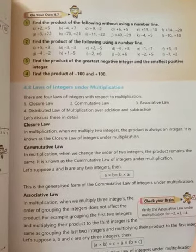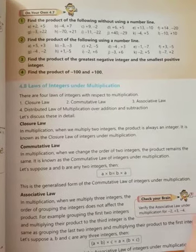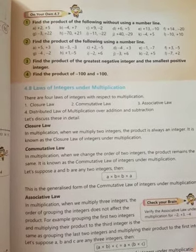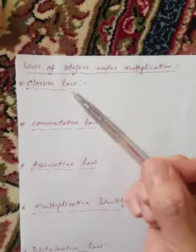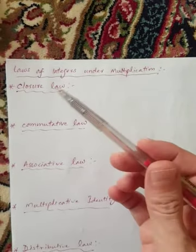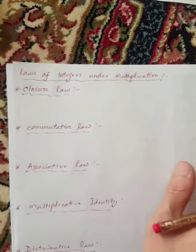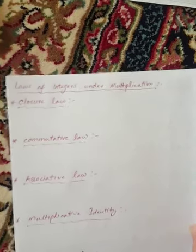Now the topic we'll share is the law of integers under multiplication. When we have whole numbers, we can discuss the laws of integers under addition. Now we'll discuss integers under multiplication, including closure law, commutative law, and associative law.